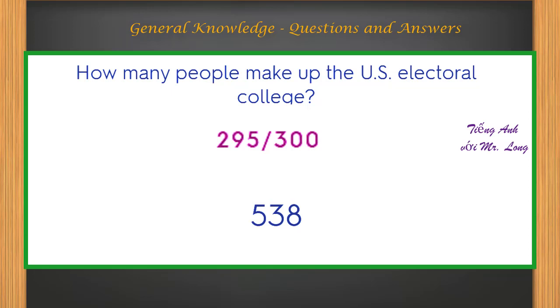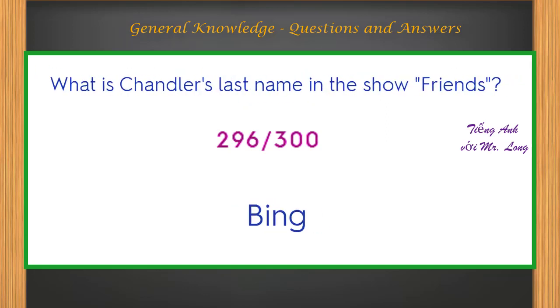How many people make up the U.S. electoral college? 538. What is Chandler's last name in the show Friends? Bing.